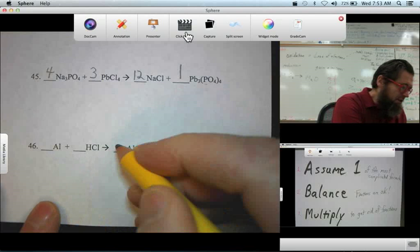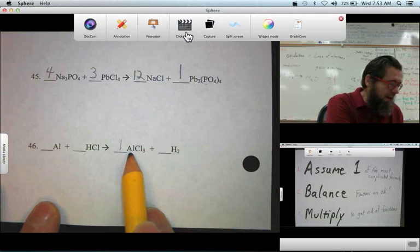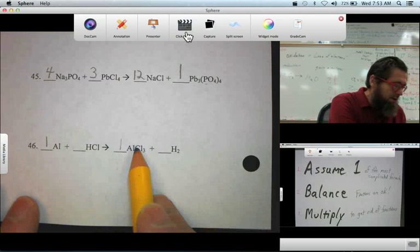Looks like this term is the most complicated. So, we'll assume one of that. That means we have one aluminum and three chlorines.